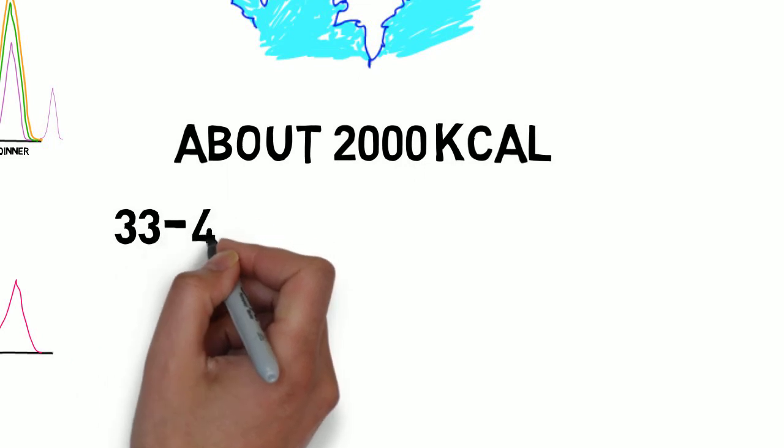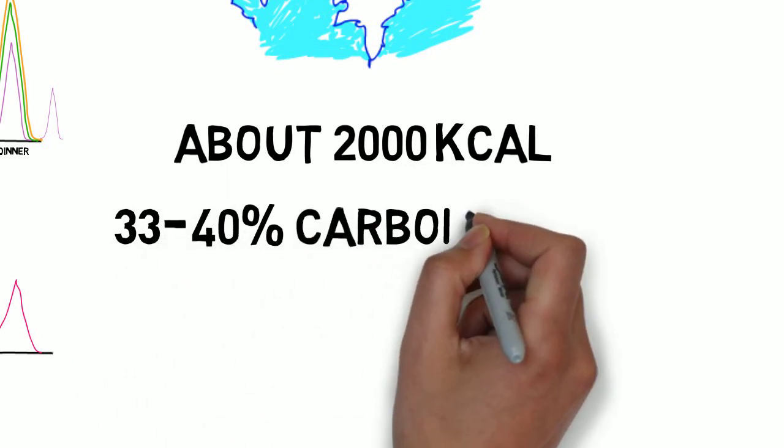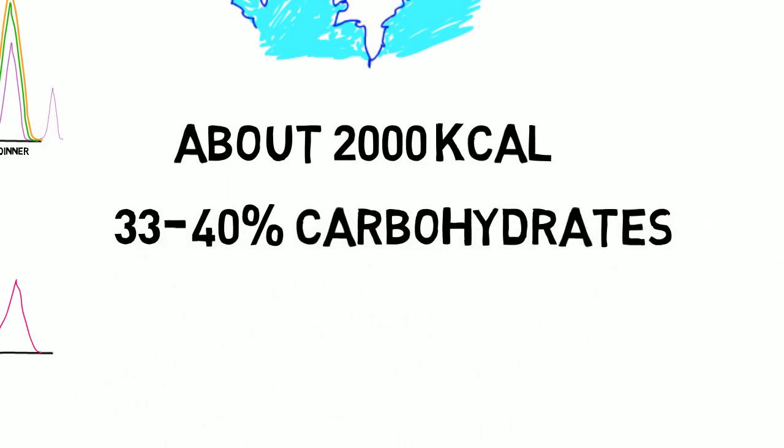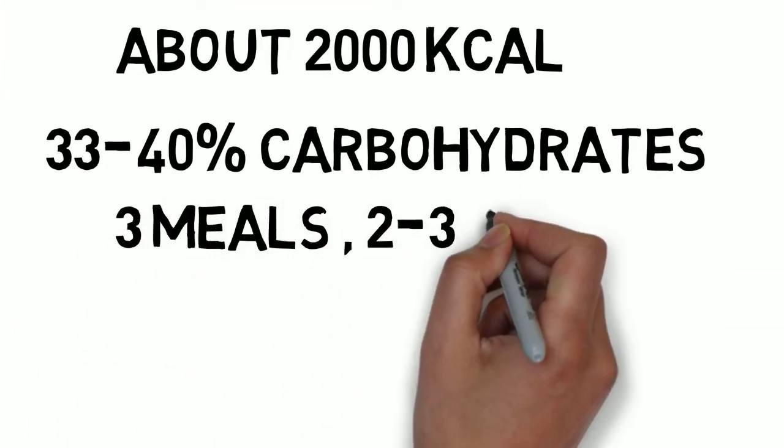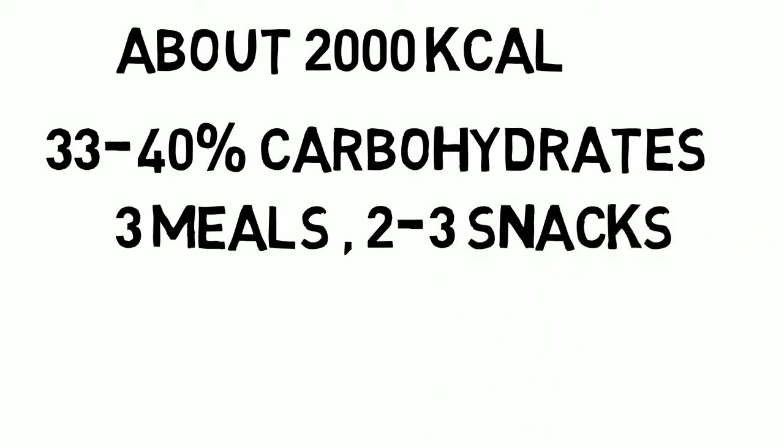Carbohydrate intake? Well, it seems that limiting carbohydrates to 33 to 40% of the total calories reduces macrosomia compared to a diet that has 50 to 60%.